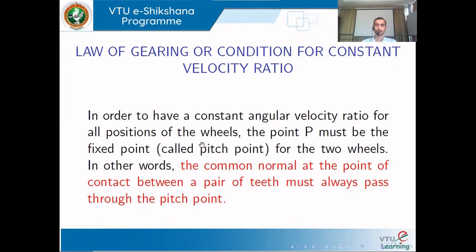In order to have a constant velocity ratio for all positions of the gear, the pitch point P must be a fixed point. In other words, the normal drawn at the point of contact must always pass through the pitch point. This is the law of gearing: the common normal drawn at the point of contact should always pass through the pitch point. From this derivation, we also know that omega1 divided by omega2 is inversely proportional to the distance from the center of the respective gear to the pitch point.